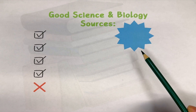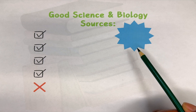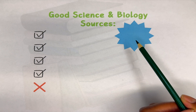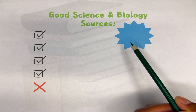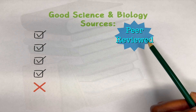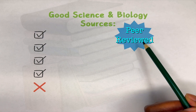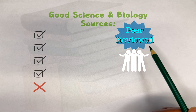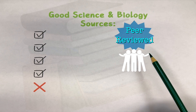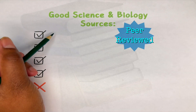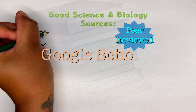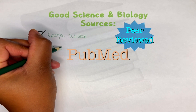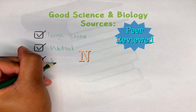You'll want to know what is considered a good science and biology source. Good sources are known as peer reviewed, meaning at least three or more scholars or experts in the field have reviewed the material and deemed it as accurate as possible. Some good peer reviewed sources are Google Scholar, PubMed, and the NCBI,